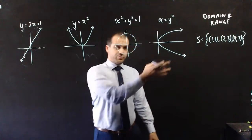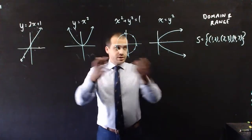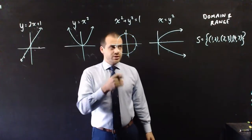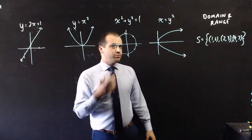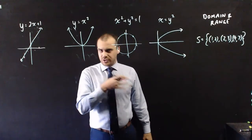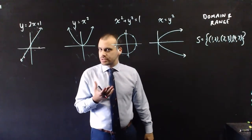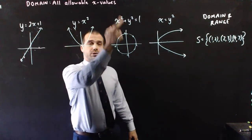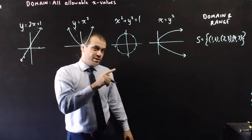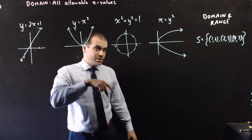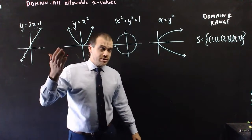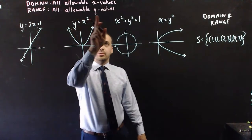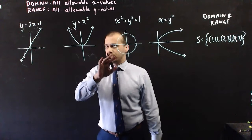We're going to be talking about domain and range, and we're going to use these relations to do it. Domain and range are actually very simple ideas. The domain is all the allowable x values, and the range is all the allowable y values.